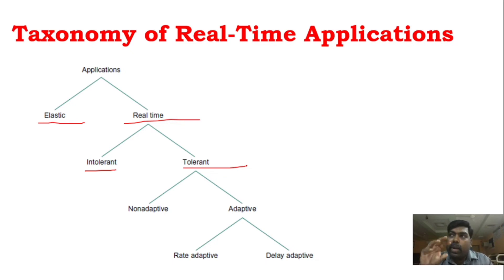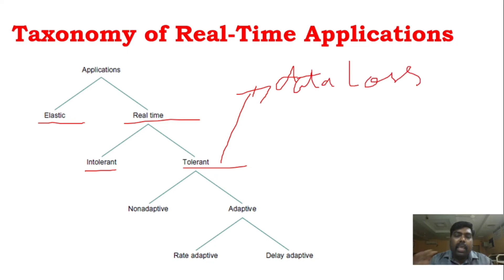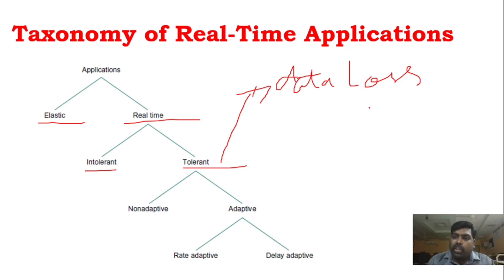Tolerant means the application can handle some data loss, and intolerant means it cannot. For example, consider audio: if a small packet is lost within a second, there will not be any problem — this is tolerant.